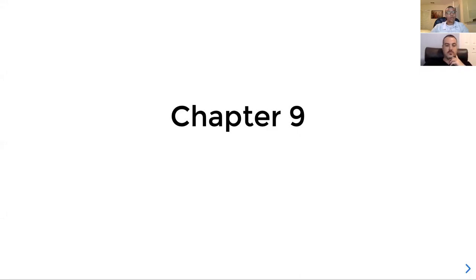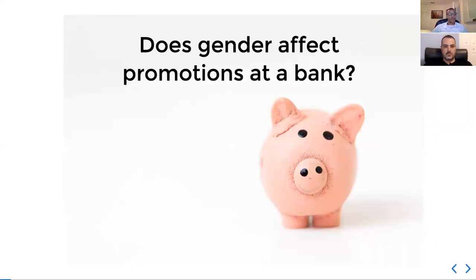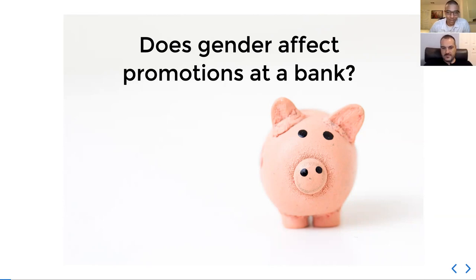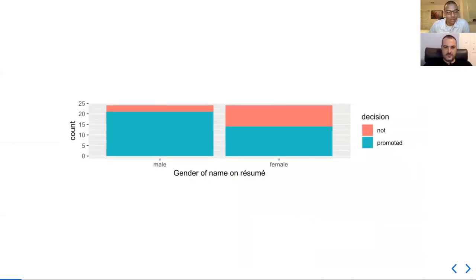We're going to cover chapter nine. Chapter nine starts off with a case study about whether gender affects promotions at a bank. They use this question to motivate the need for hypothesis testing by saying we can plot the data and see that males are promoted more than females at this bank. But there's an open question about whether that's enough to prove that there's bias.